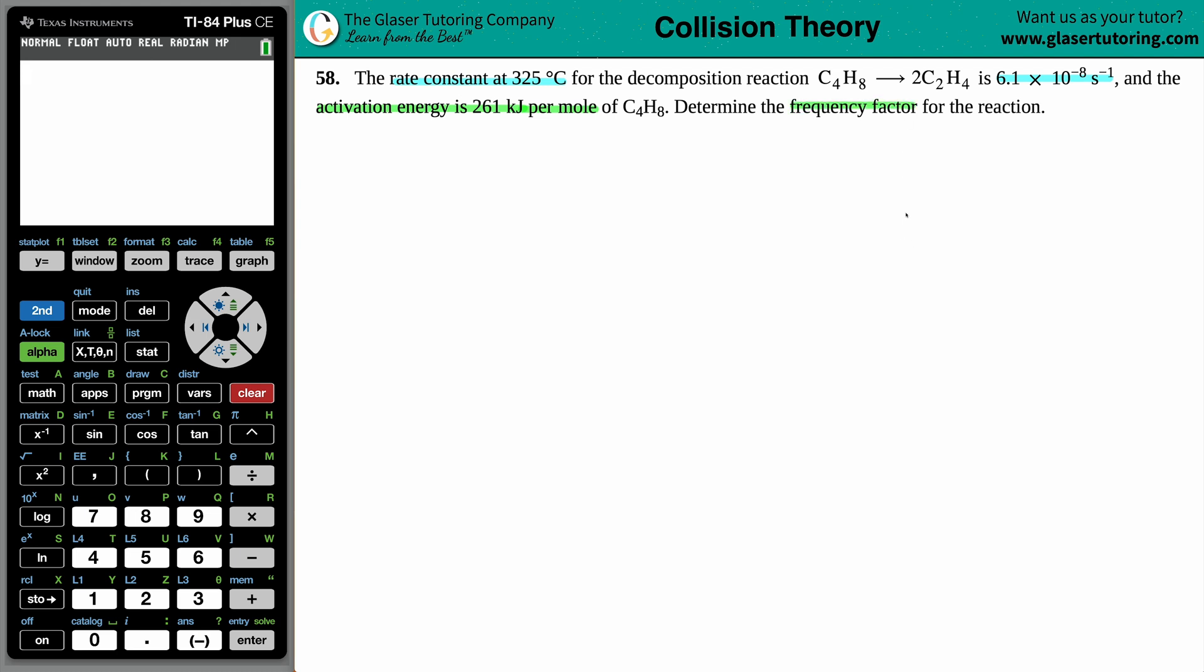Okie dokie. Alright, so they've given us a lot of information here. We have a temperature, 325 degrees Celsius. They said that the rate constant at this information is 6.1 times 10 to the negative eighth. So we know that the rate constant is 6.1 times 10 to the eighth per second. And they also gave us the activation energy, right? Now, specifically here, they want us to find the frequency factor.